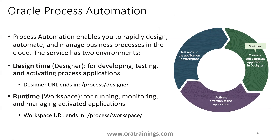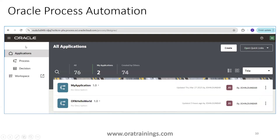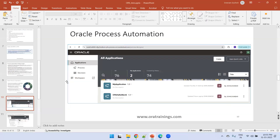As a developer, when you log into the OPA tool there are two particular areas to understand. First is the Designer — where as a developer you create the processes. Second is the Workspace — where you test the processes once an application is activated. So the login screen shows these two things: Applications on the left side and Workspace. Applications is the playground where you create applications, and once activated you can test in the Workspace.